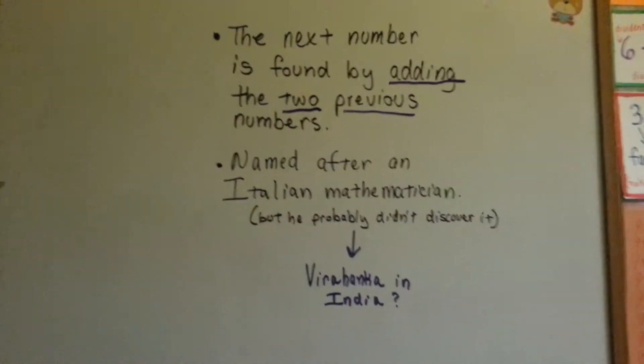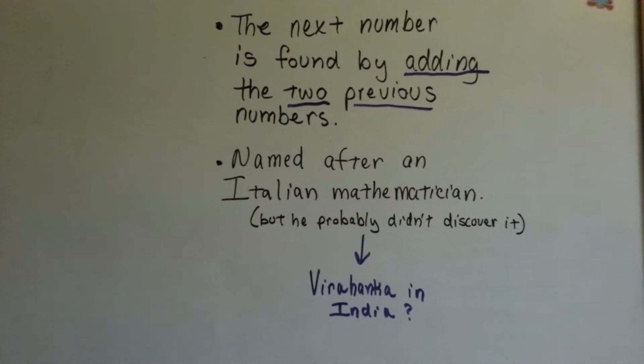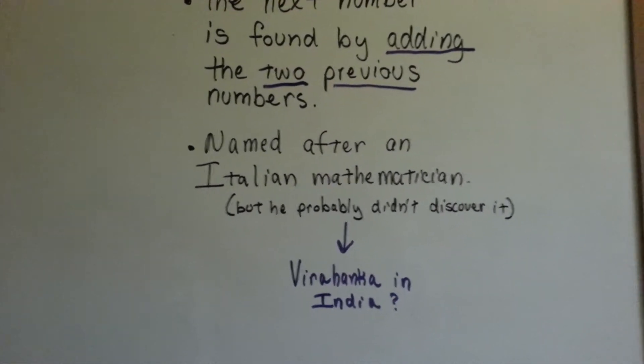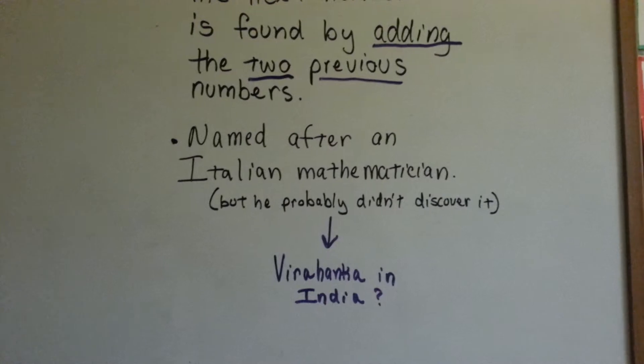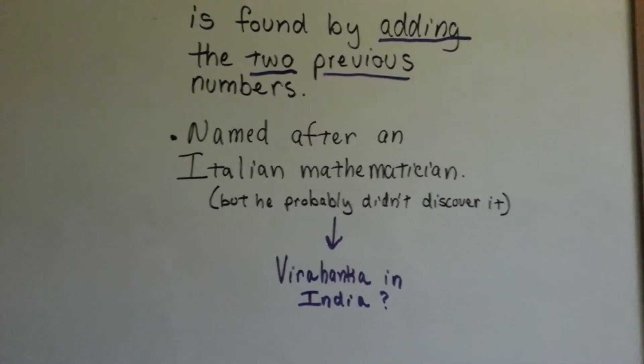So, the next number is found by adding the 2 previous numbers, the addend and the sum. It's named after an Italian mathematician, Fibonacci, but he probably didn't discover it because they have seen it as early as the Virahanka in India.